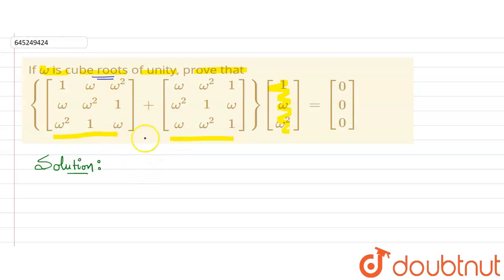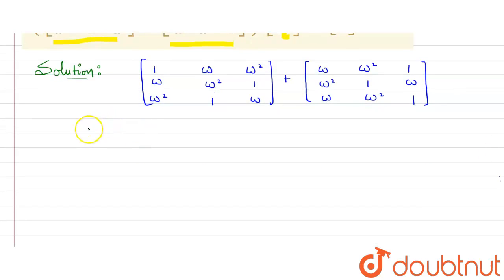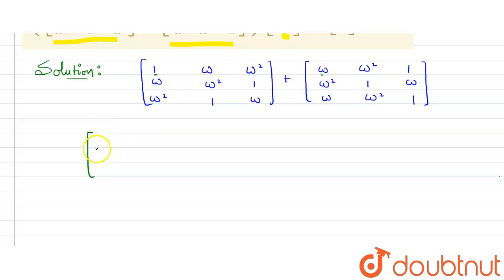First we will find the addition of these two matrices. Let's write these two matrices here — these are the two matrices whose addition we need to find. We know how to add two matrices: add values at the same position. For example, here we have one and here we have omega, so at this position I will write one plus omega.